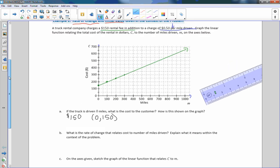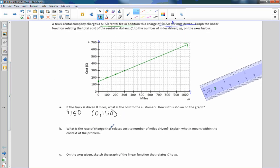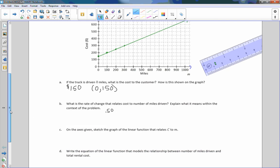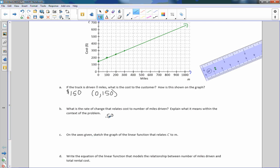Part B: What is the rate of change that relates cost to the number of miles driven? The rate of change is simply what we're getting per mile driven. So the rate of change is 0.50. Explain what it means in the context of the problem. For every mile driven, they charge $0.50.